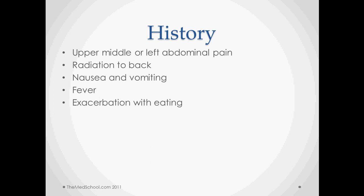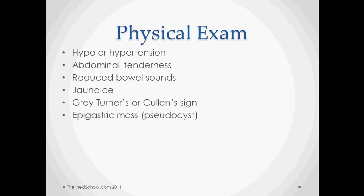A lot of these people have nausea and vomiting, some have fever, and almost all of them have exacerbation of these symptoms when they try to eat something. On the physical exam they might have hypo- or hypertension — hypotension can occur because some cases are associated with a lot of bleeding or possibly movement of fluid into the peritoneal space. Abdominal tenderness is common but it's not going to be as severe as the pain they're having from the pancreatitis.